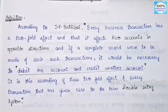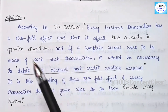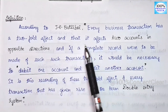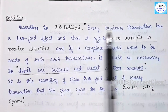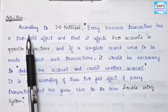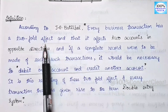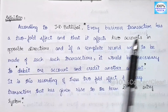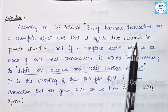Next we have definition. That is why we will get the definition quite easy. According to J.R. Battley, every business transaction has a two-fold effect, and it affects two accounts in opposite directions. So when we look at a transaction, we look at two effects, and two accounts are affected.